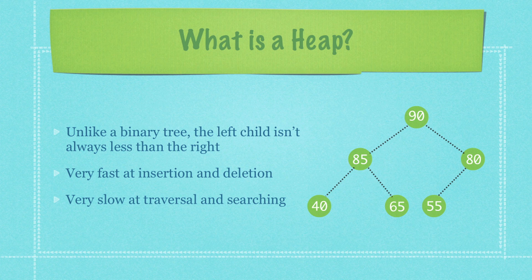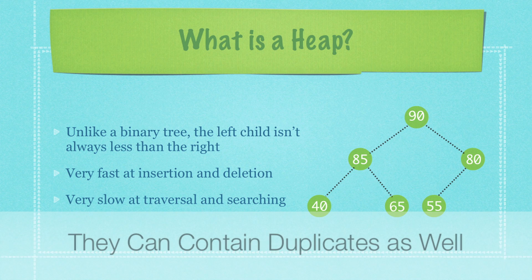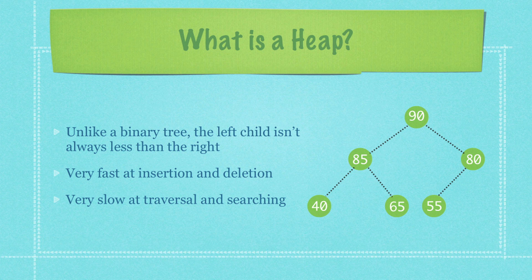Now unlike a binary tree the left child isn't always less than the right child. And why would we use heaps? Well they are very quick in regards to insertion as well as deletion. However they are very slow in regards to traversal or searching. And as you're going to see later on they are also particularly quick in regards to sorting whenever we take a look at the heap sort.